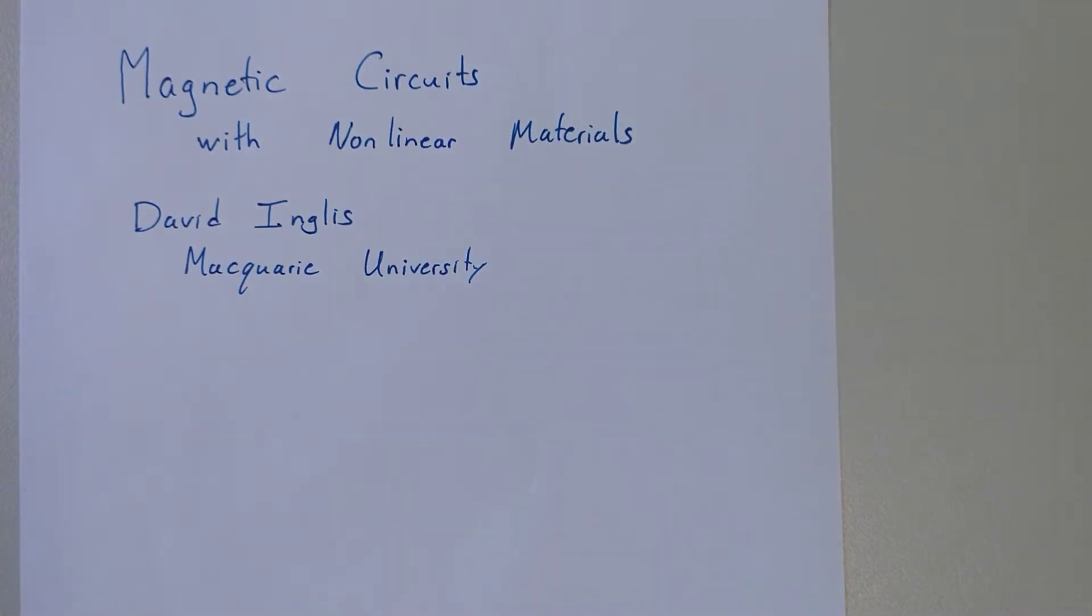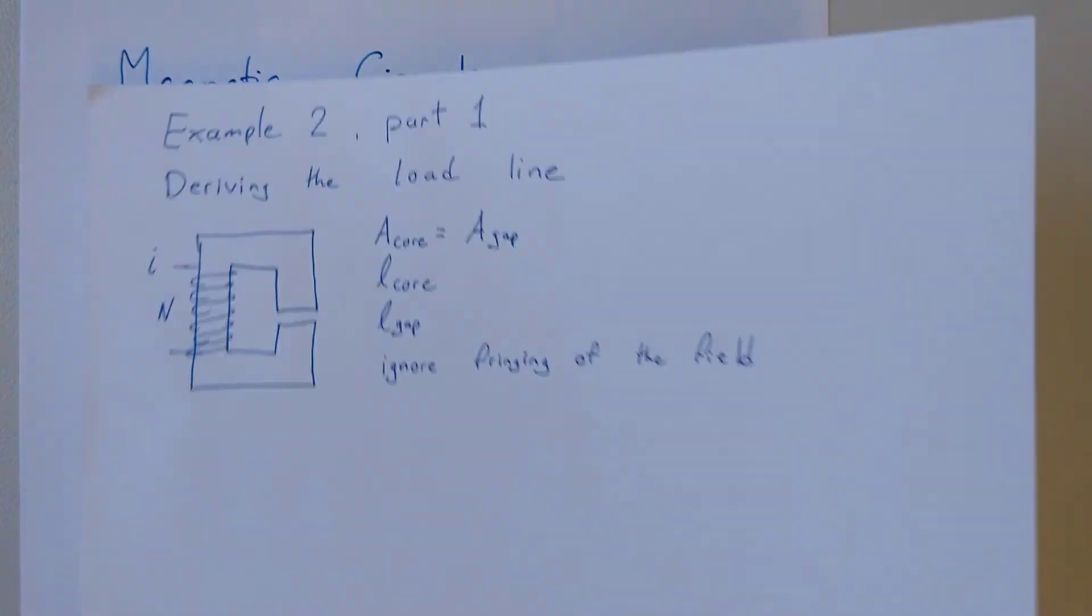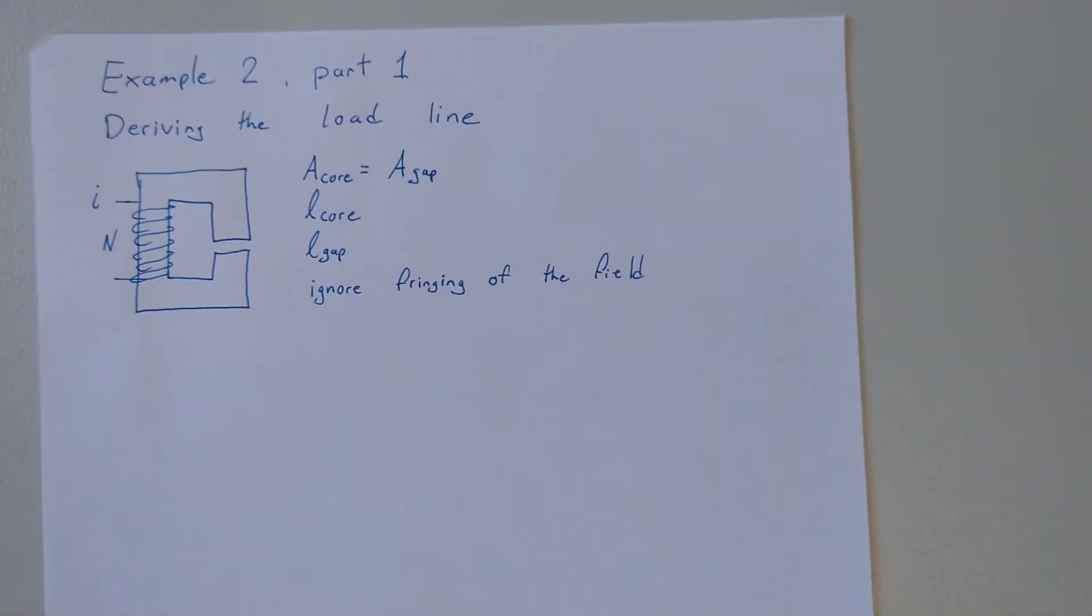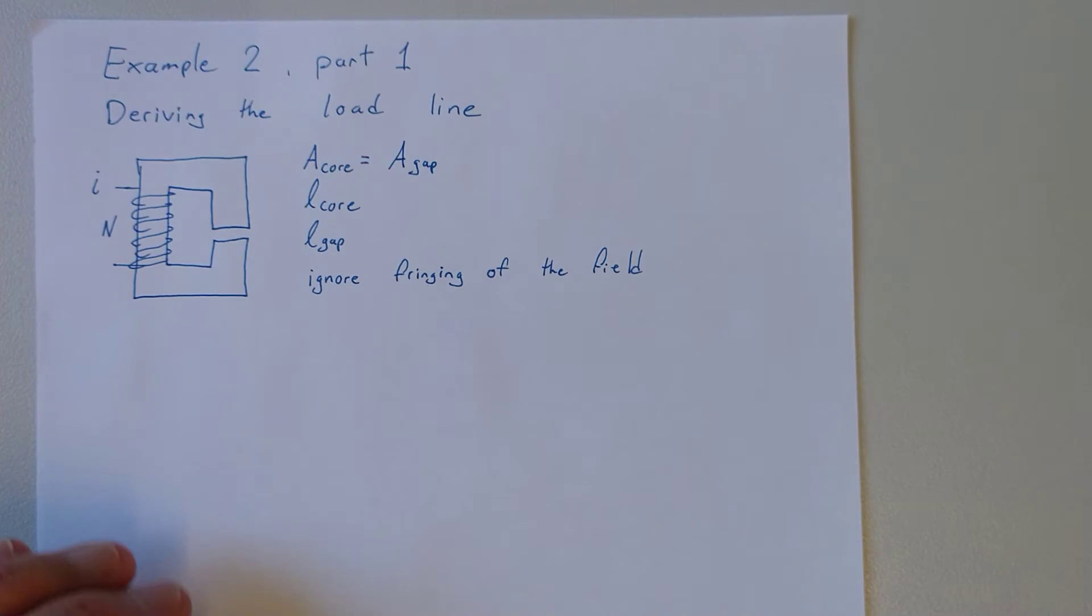Hi, my name is David Ingalls. We're going to do another example of magnetic circuits with nonlinear materials. In this example, we'll do part one. We'll derive the load line which we can use to solve for the operating point of a nonlinear material.